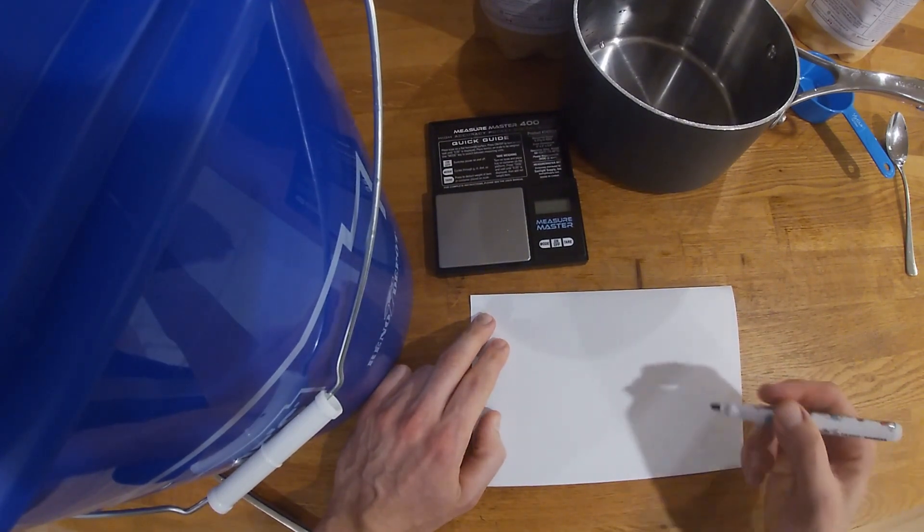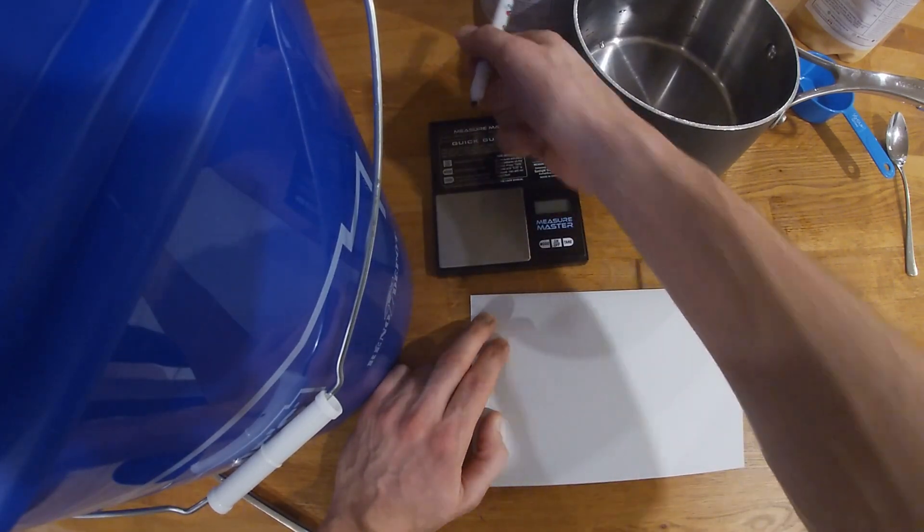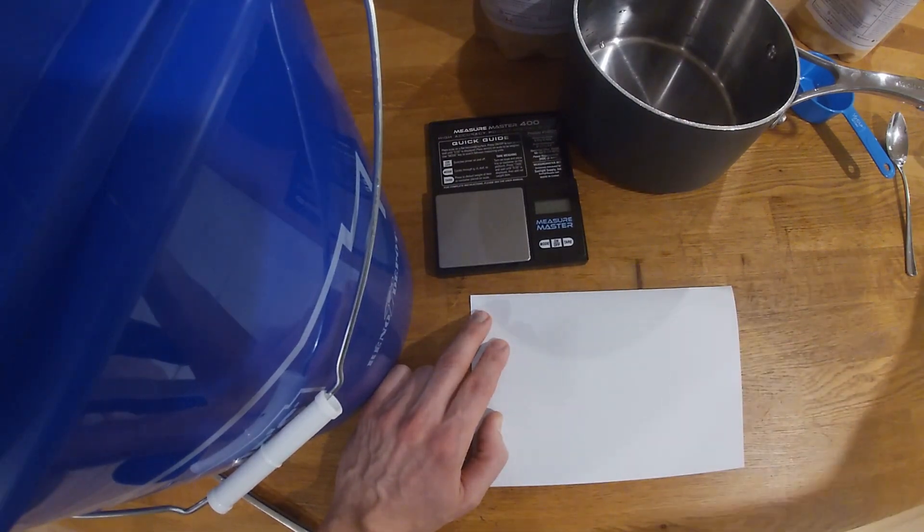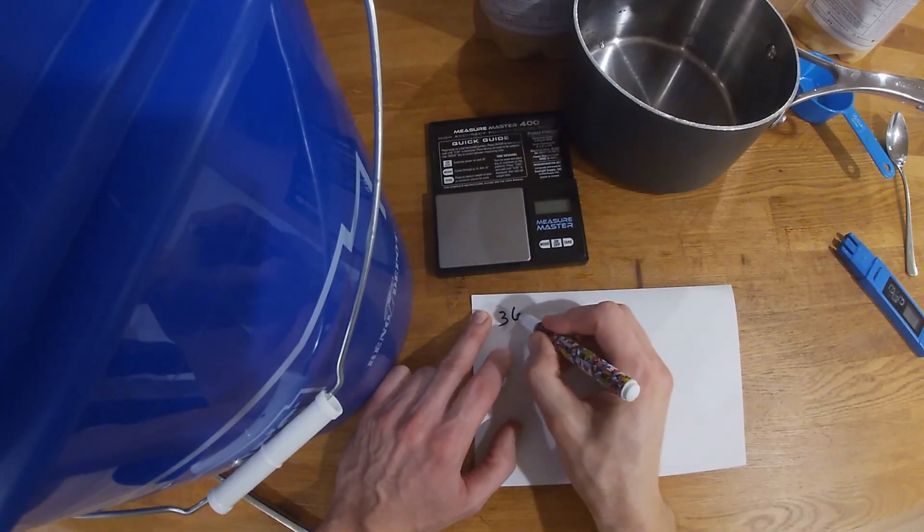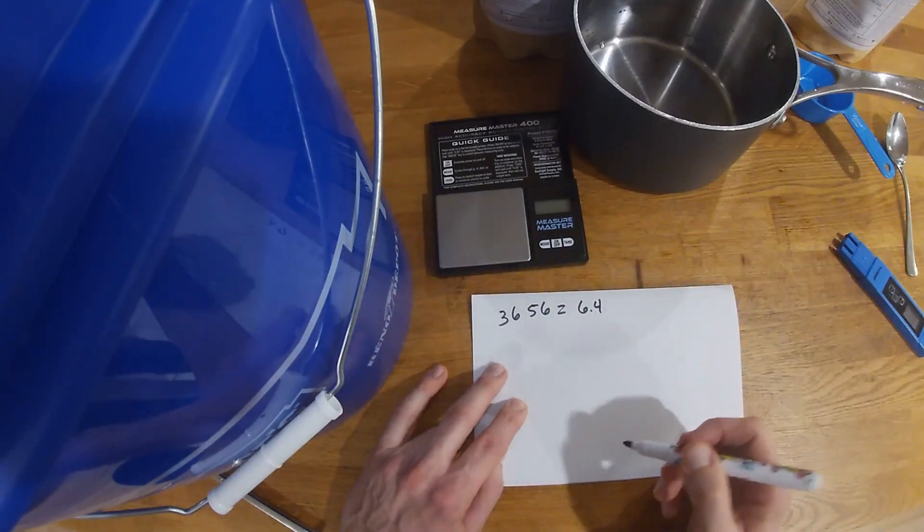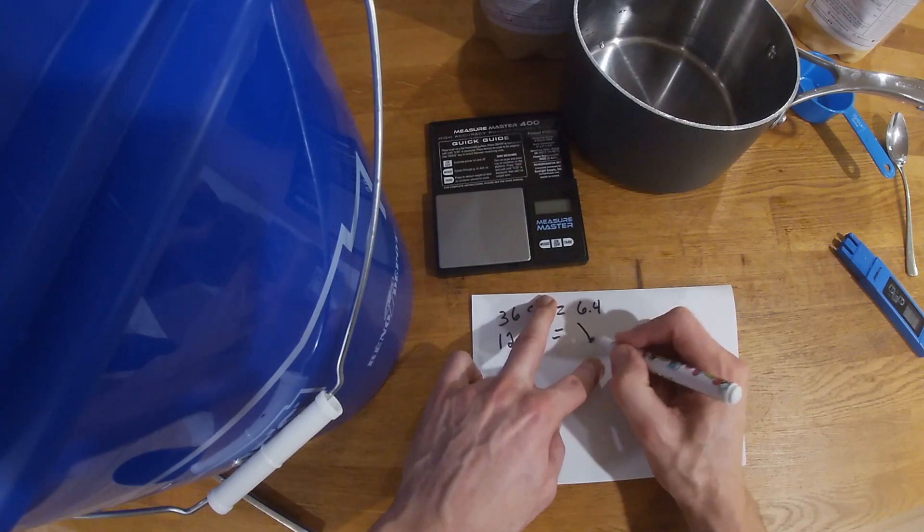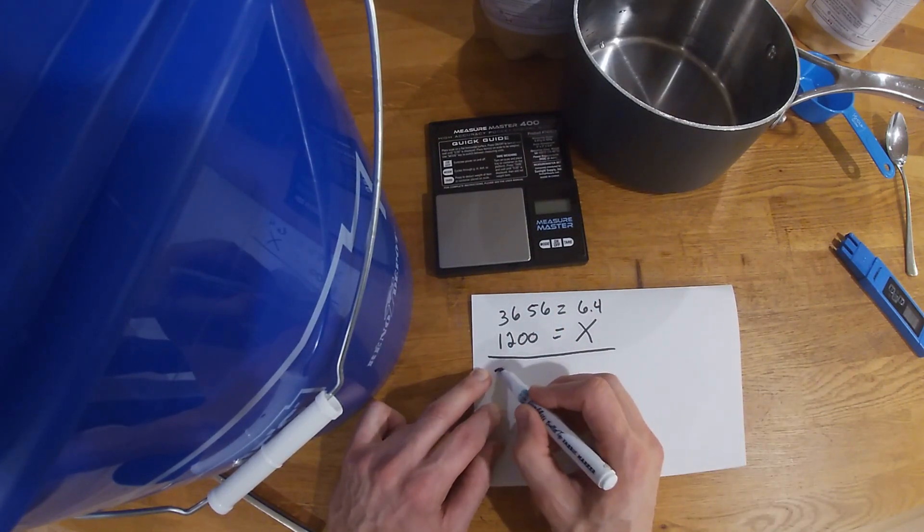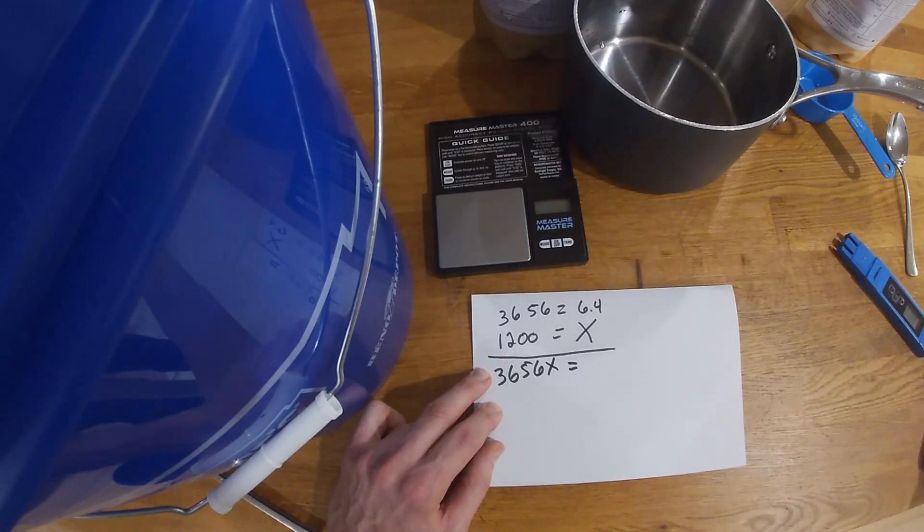All right, so we're gonna do a quick equation to find out how much of this nutrient you need to reach a certain EC level. Because if you're looking for only like 1.2 for lettuce, we're putting way too much nutrient. This mix that it says here is too strong. So it was 3656. So you go 3656 equals 6.4 grams of the lettuce formula. We want 1200 ECs. So this is the EC part, this is the grams of lettuce formula equals I don't know how many, so we're gonna put that as an X.